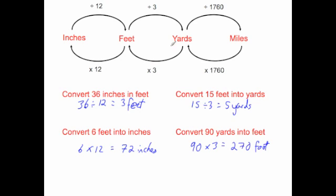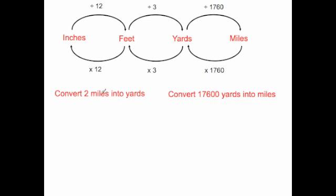Okay, so that's how you convert between those ones. Let's have a look at something involving miles. Convert 2 miles into yards. To go from miles into yards you multiply by 1,760. So 2 miles times 1,760 is equal to 3,520. So 2 miles is equal to 3,520 yards.